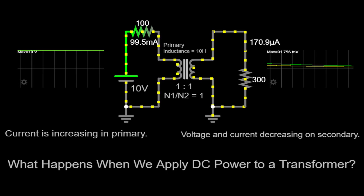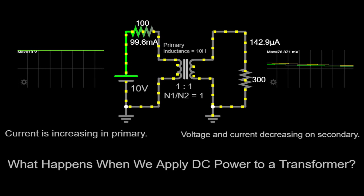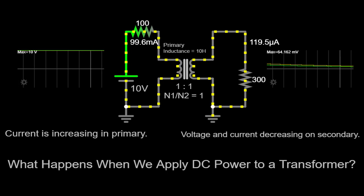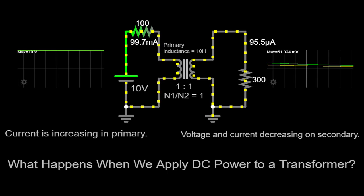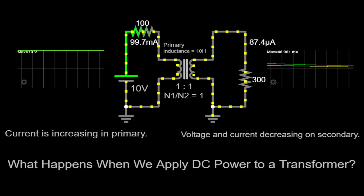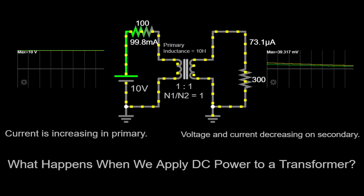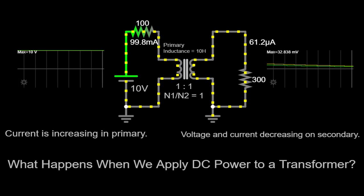While DC power is not suitable for power transmission in conventional transformers, it's important to mention that there are specialized transformers known as DC-to-DC converters. These transformers are specifically designed to convert one DC voltage level to another. DC-to-DC converters use different principles than traditional AC transformers, such as switching circuits or pulse-width modulation techniques.